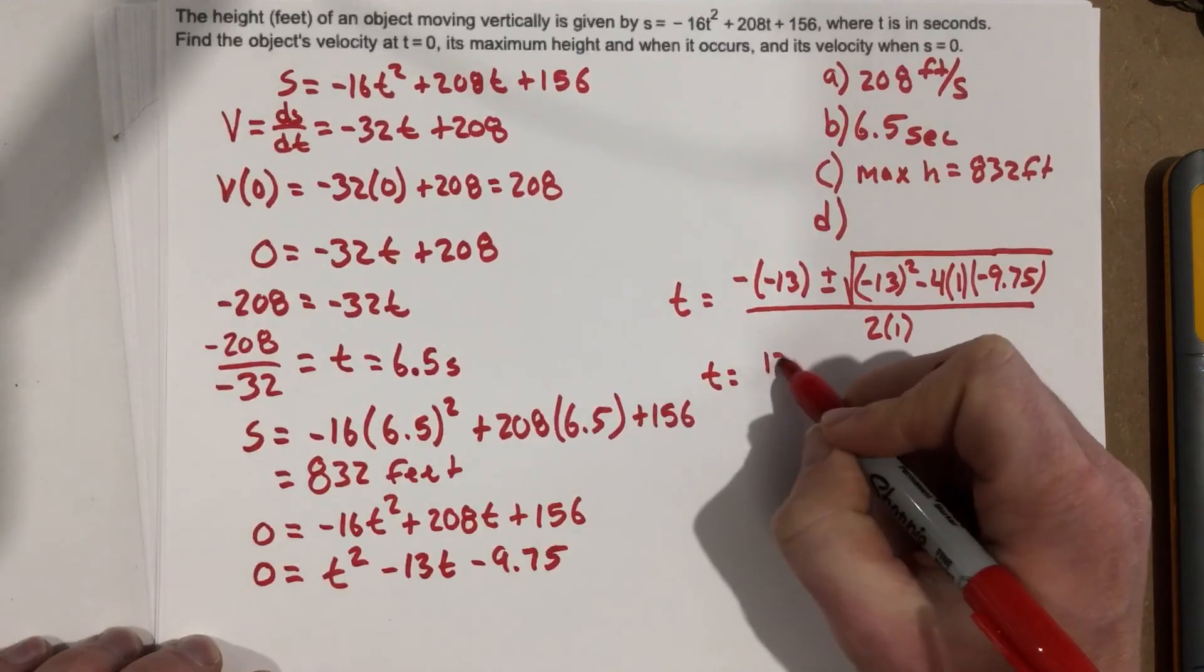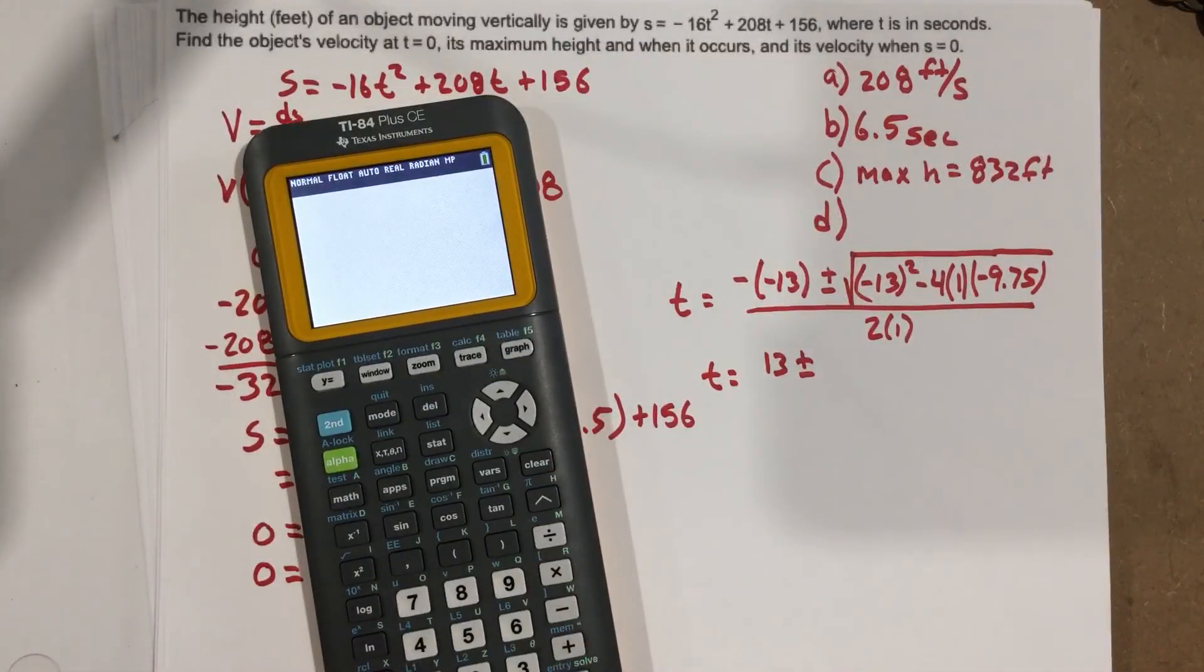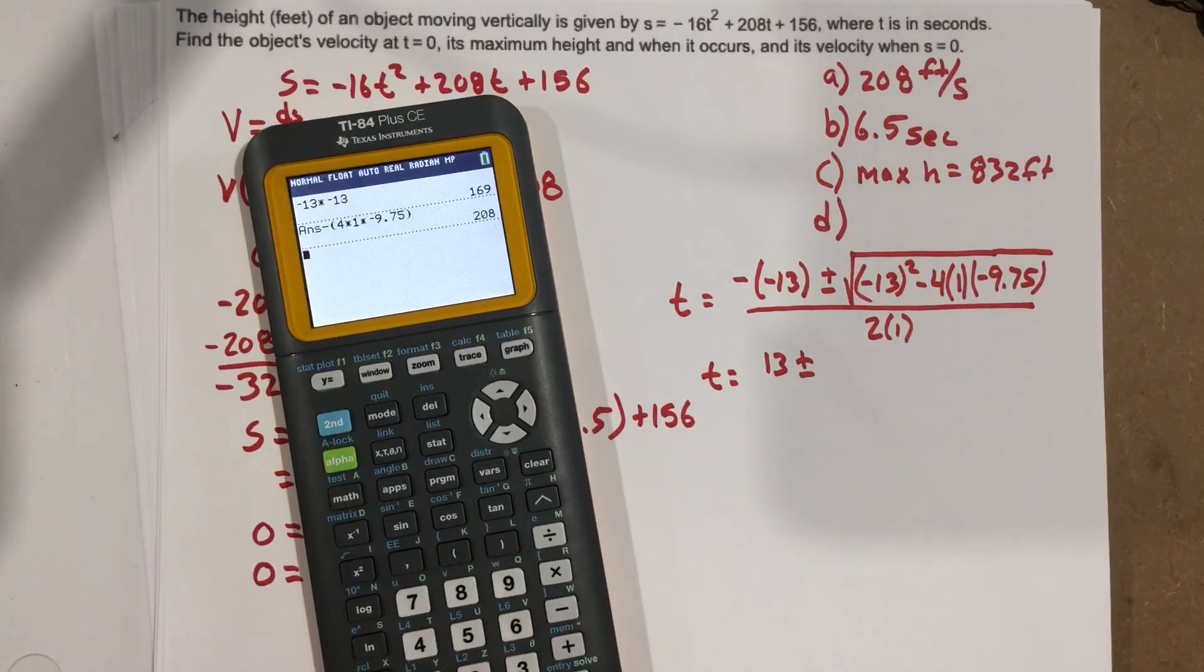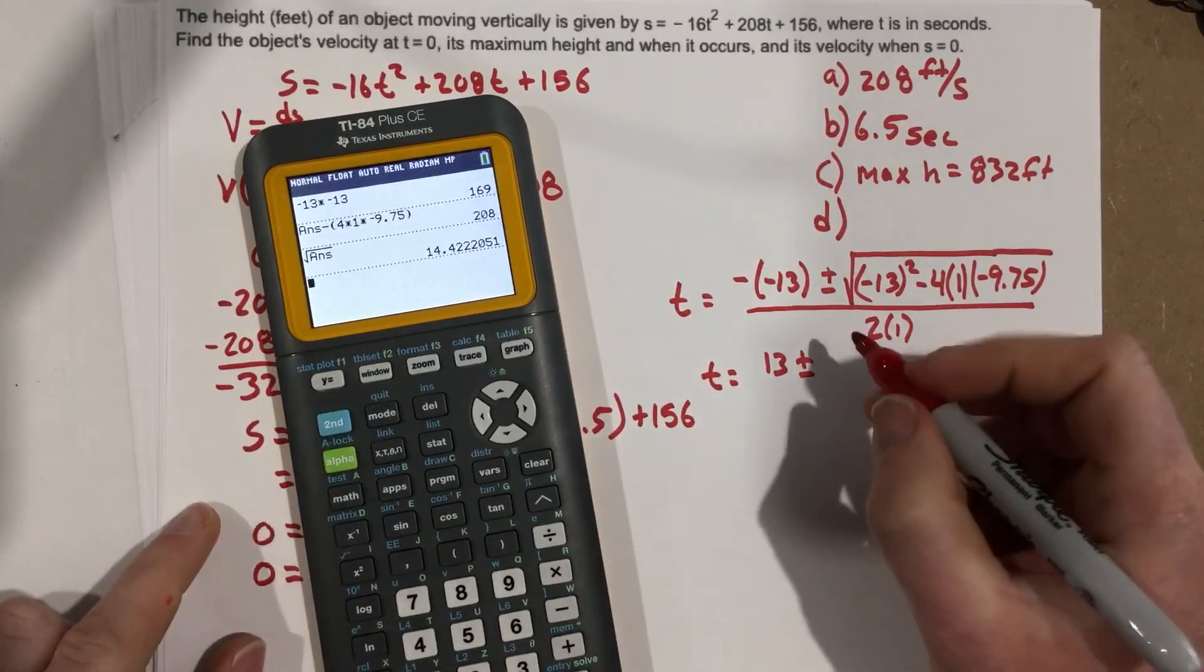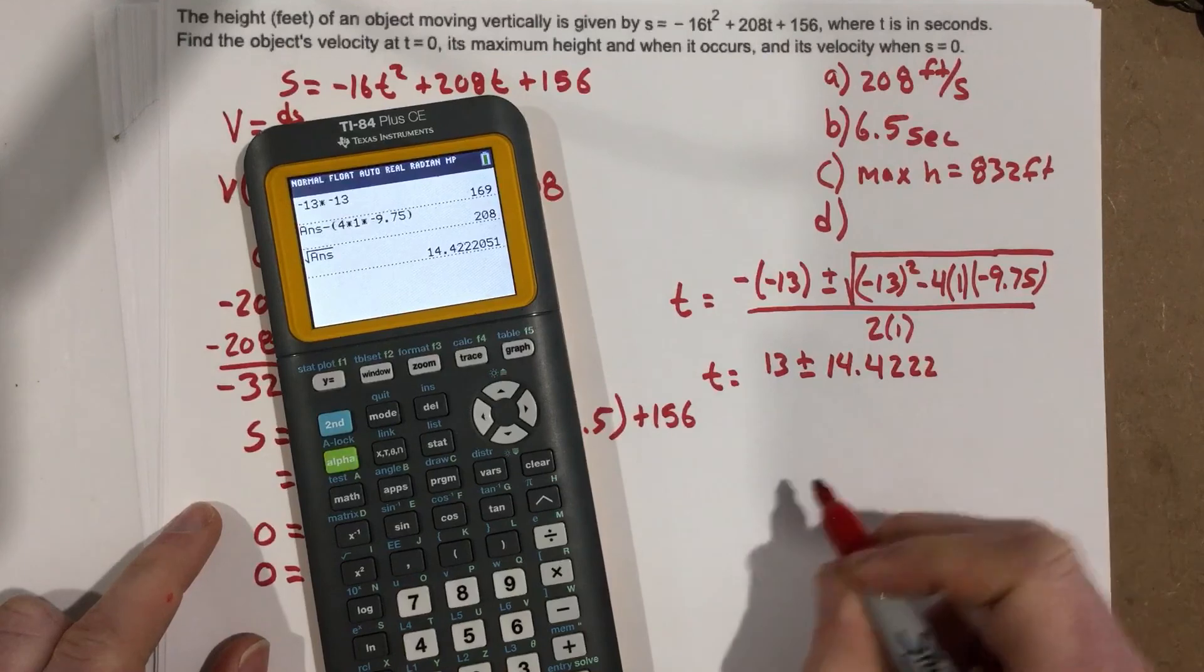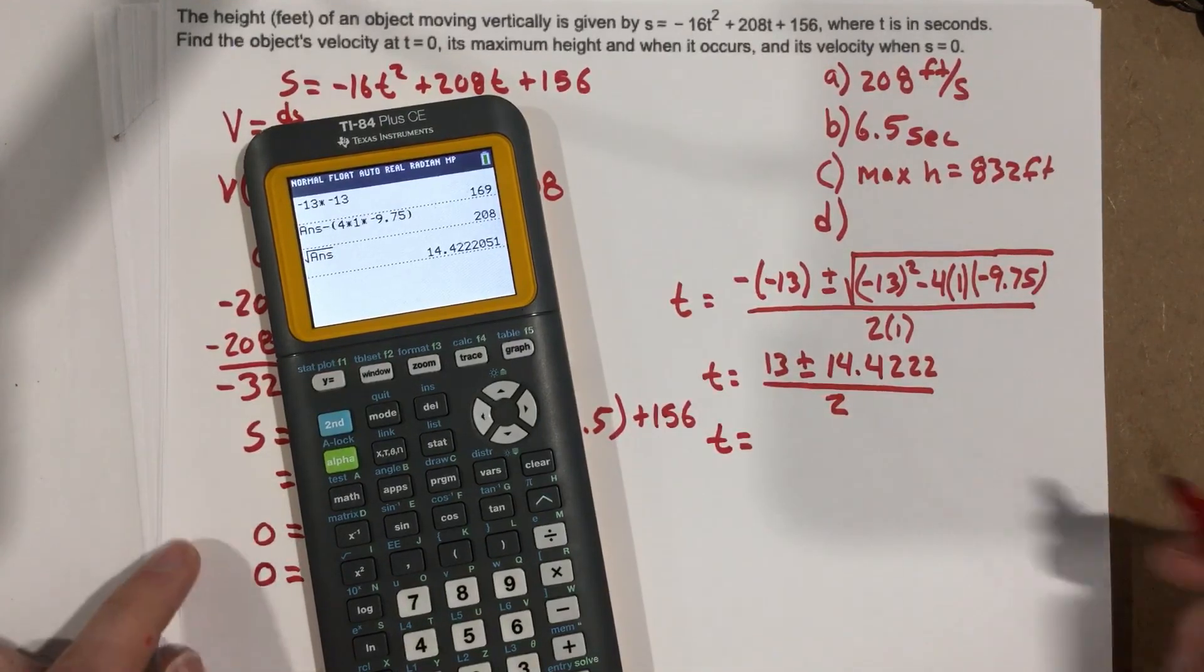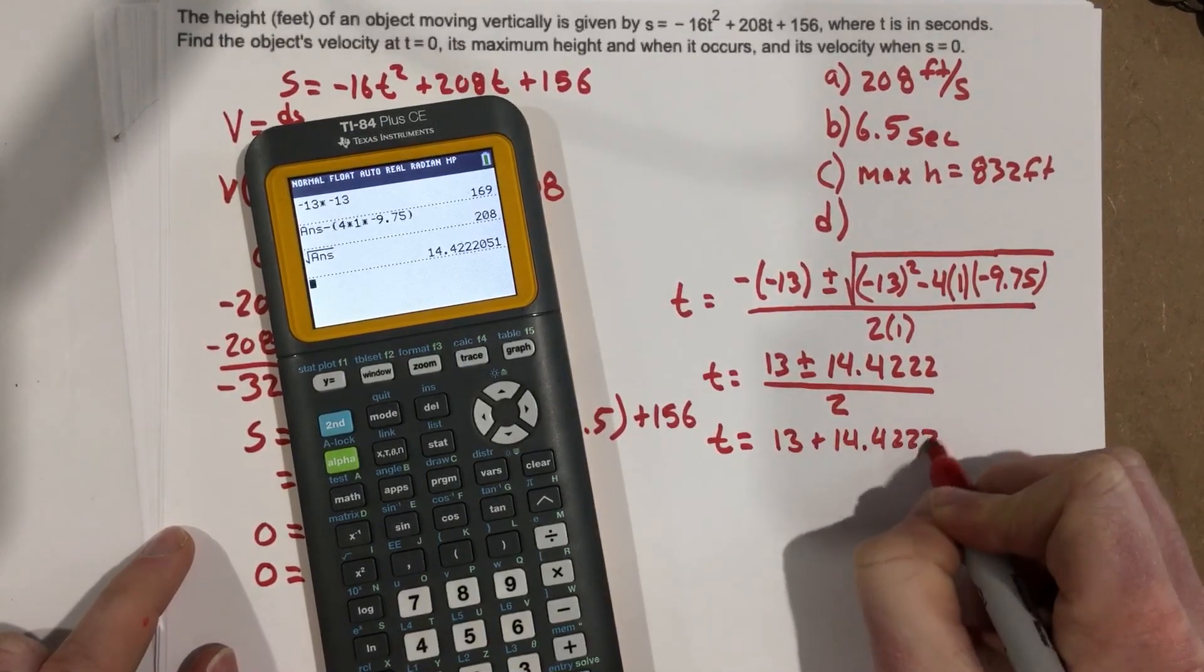So our time is going to be 13 plus and minus, I want to plug all that in the calculator. So I'm going to say negative 13 times negative 13 minus 4 times 1 times negative 9.75. 208, so I got 13 plus and minus 208. Let's take the root of that as well. And that's 14.4222. I'm going to use a few decimal places there. Divided by 2. Now remember, time has to be positive here. So if I do 13 minus 14, well, that's not going to work, because that will be a negative.